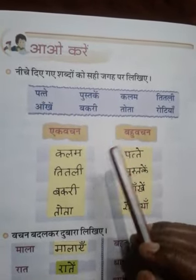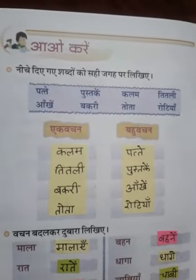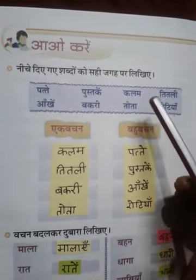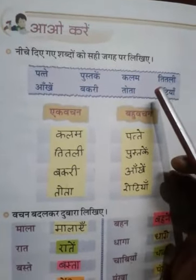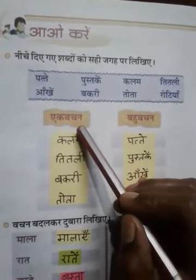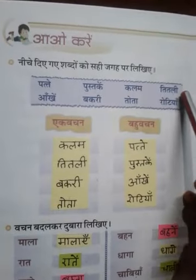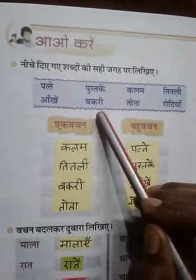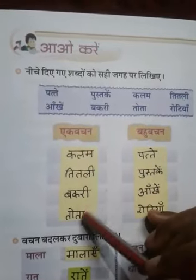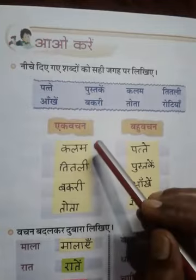Baccho, ab un shabdon se pata chalta hai ki ye ek vachan hai ya bahu vachan — yanni in ki sankhya ek hai ya ek se adhik hai. To sabse pehle hum ek vachan dhundte hain yahan pe. To kalam, titli, bakri, tota — inki sankhya ek hai, yin ham is tarah se likhenge ki sankhya ek hai: kalam, titli, bakri, tota sahi hai.